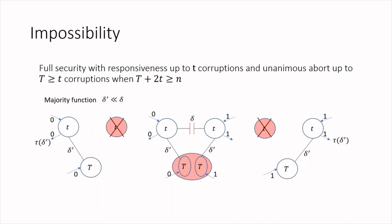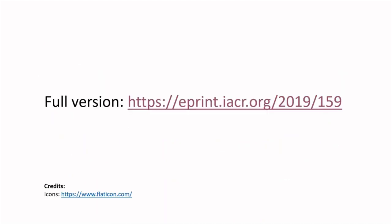This impossibility was for the case of unanimous abort as extended security. Of course, if full security is required as extended security, we also need that large T is smaller than n/2, but this we already knew from classical impossibility results. Thank you very much for listening. The full version of the paper is provided.